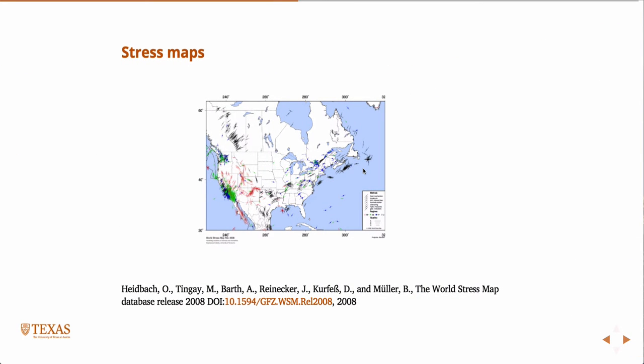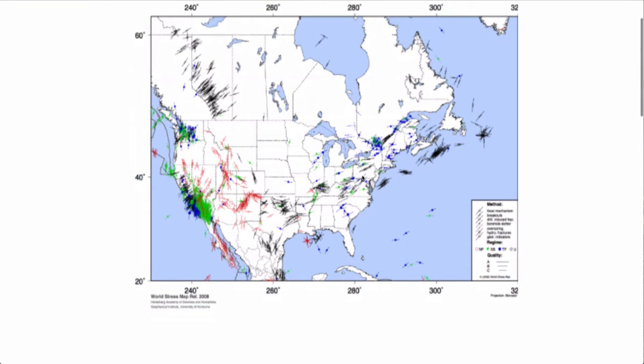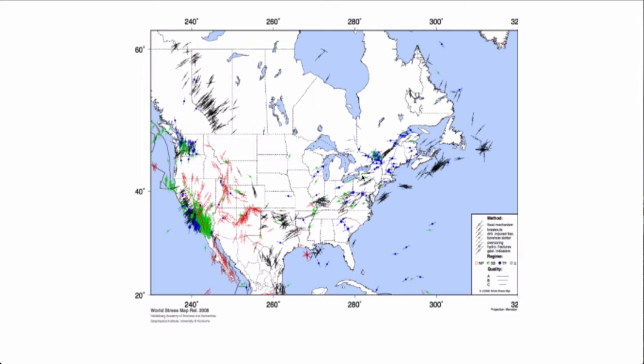In Zoback's book there's quite a few stress maps where the orientations of stress around, essentially all these little lines represent the orientation of the principal stresses in some way depending on the color. There's some legend about how exactly they were found. Many of them are from borehole observation, certainly in Texas along here. A lot of the ones in California were inferred from earthquake focal mechanism data.